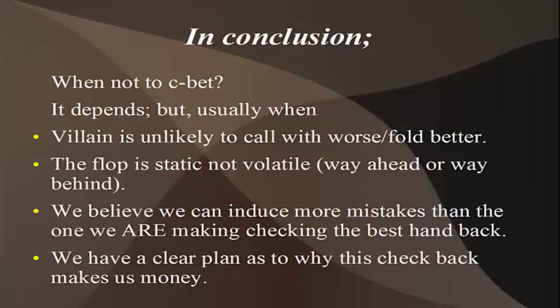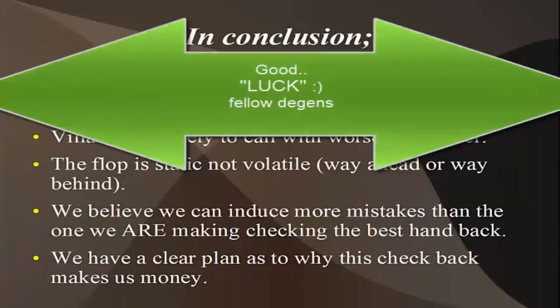I really want you to think about that. The question is not just can we induce mistakes — you can induce mistakes by checking back and under-repping your hand against almost anybody. But we have to be able to induce more mistakes than the one we ourselves are actually making by checking back the best hand. We also have to have a very clear plan as to why this check-back is likely to be profitable. If we don't know how the check-back is going to make us extra money, then there's probably not a lot of incentive for us to check back as preflop raiser. Our default option should be to make a continuation bet on most flops, most of the time, against most opponents. Until next time, this is Navinod — good luck.